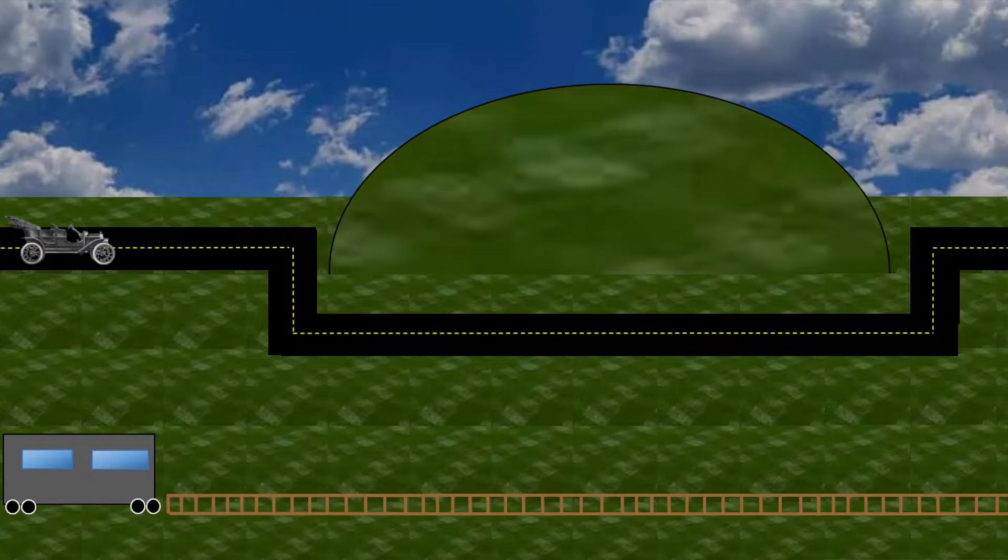Every morning, 100 commuters travel west to east. They have two options for their journey: by trolley and by car. The trolley is public transit. As a consequence, it doesn't matter how many people choose to take it. It'll still have the same travel time, in this case, 20 minutes.